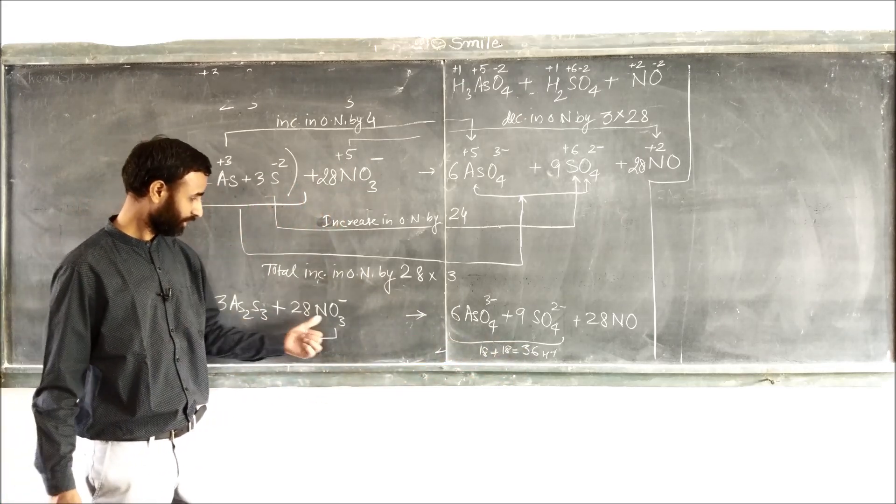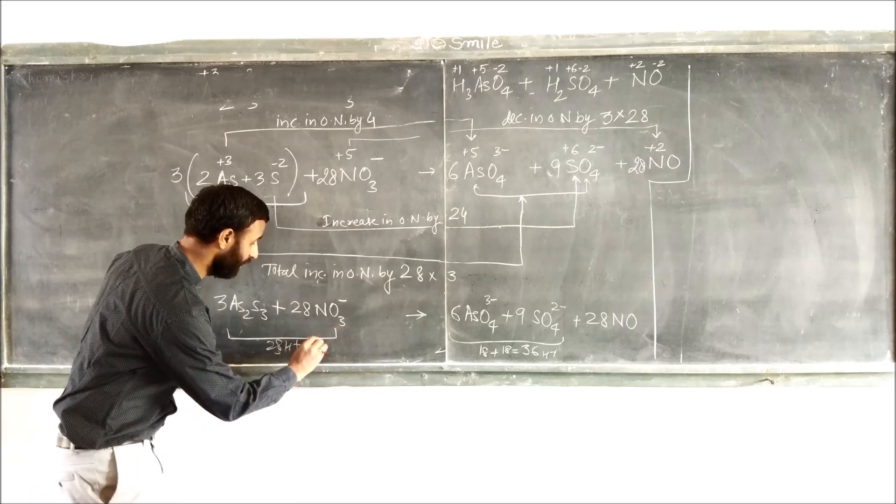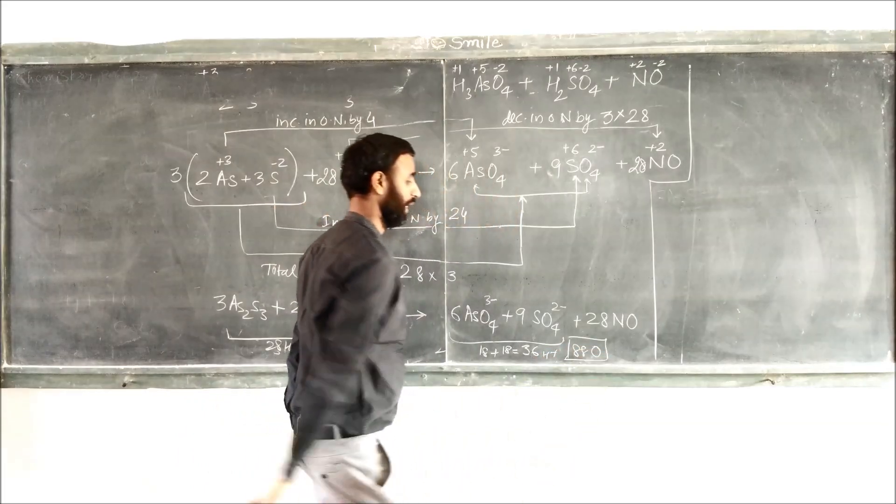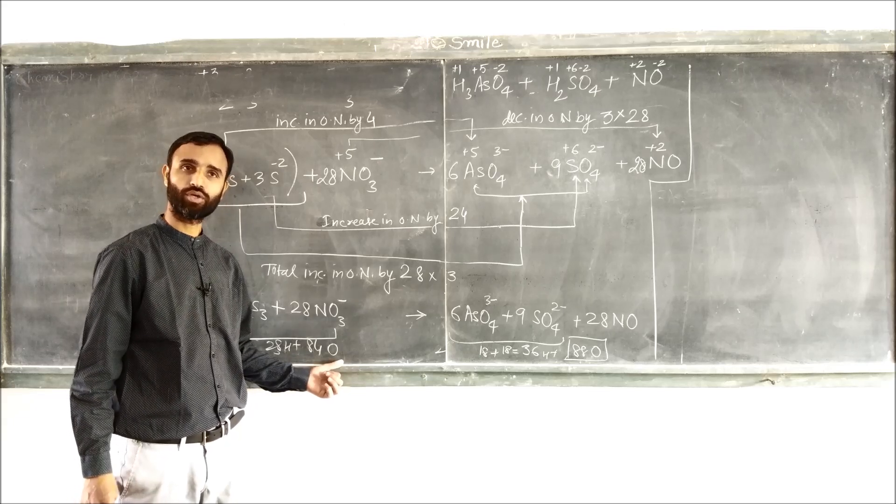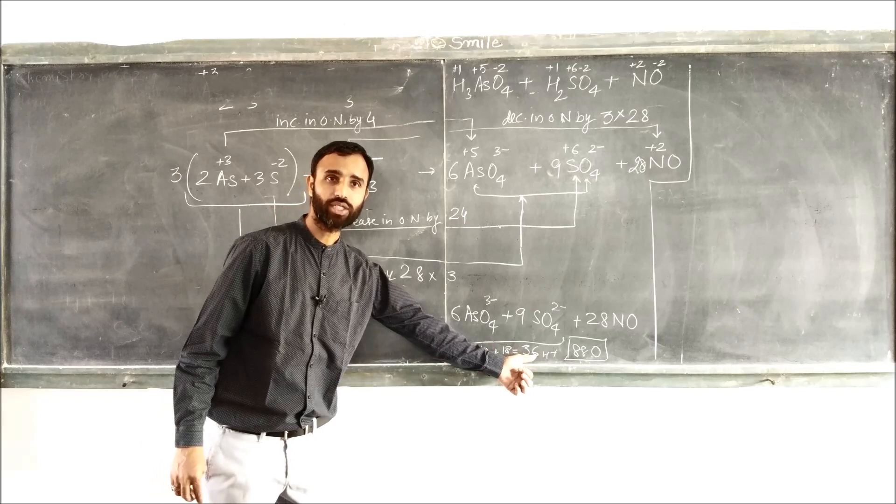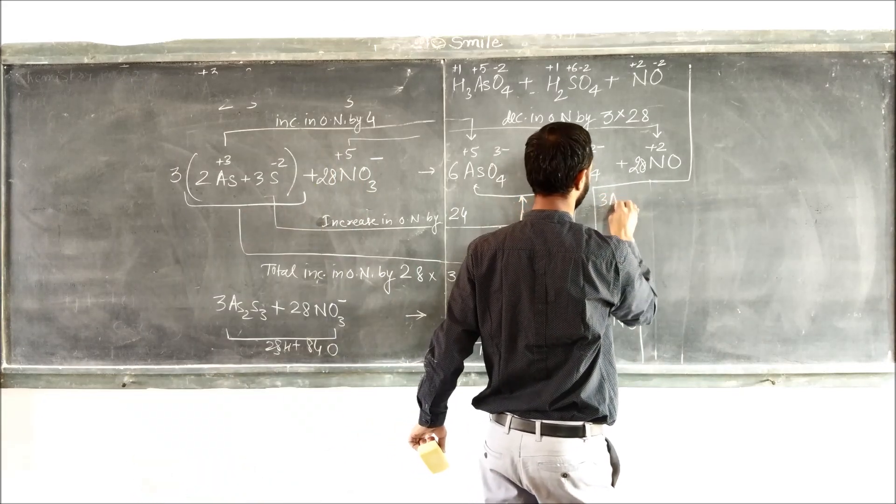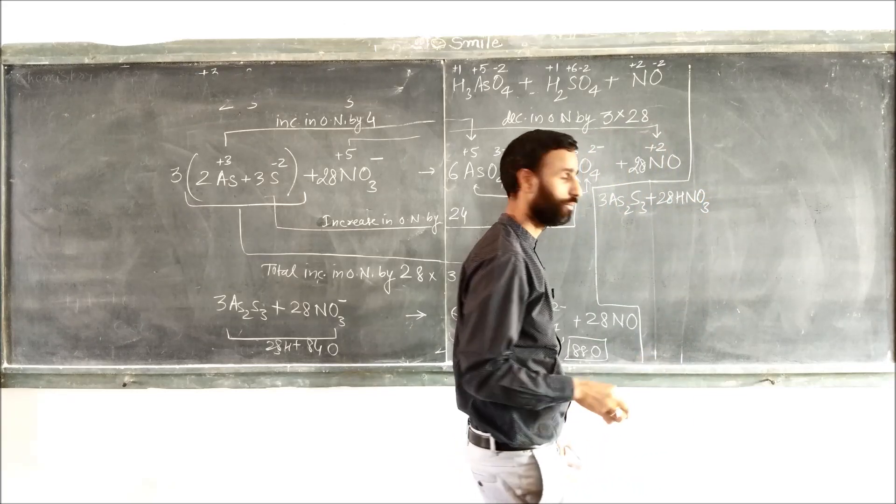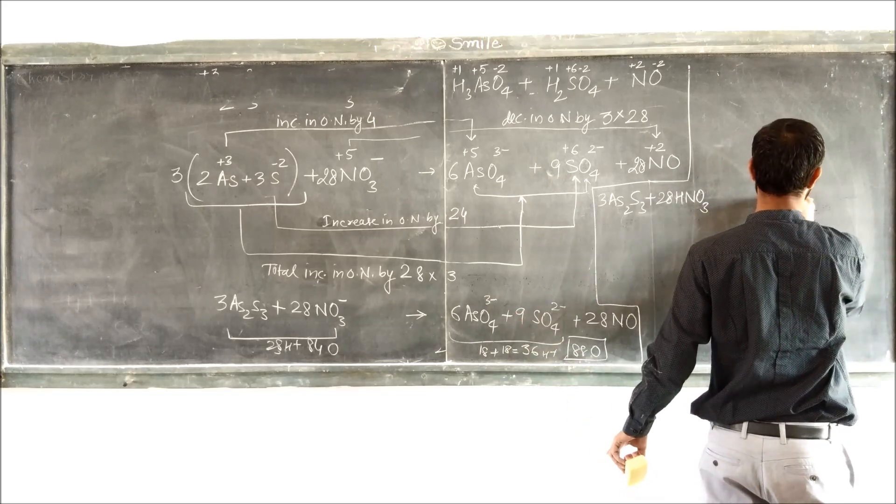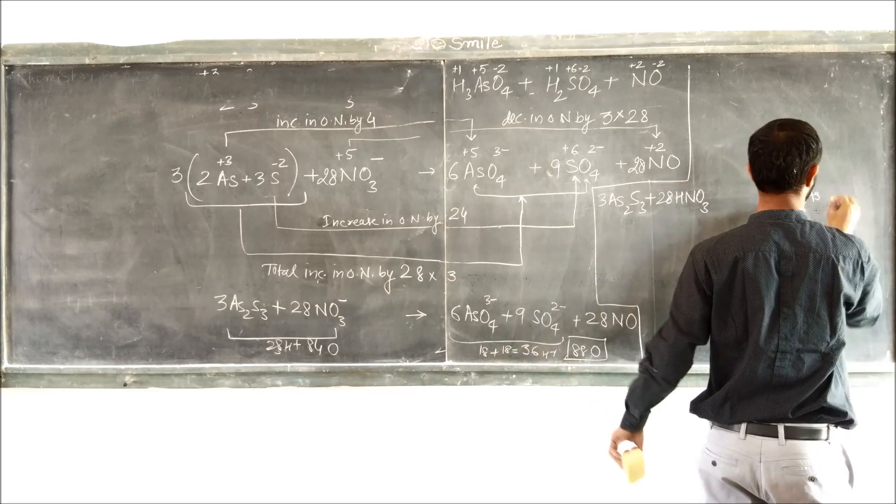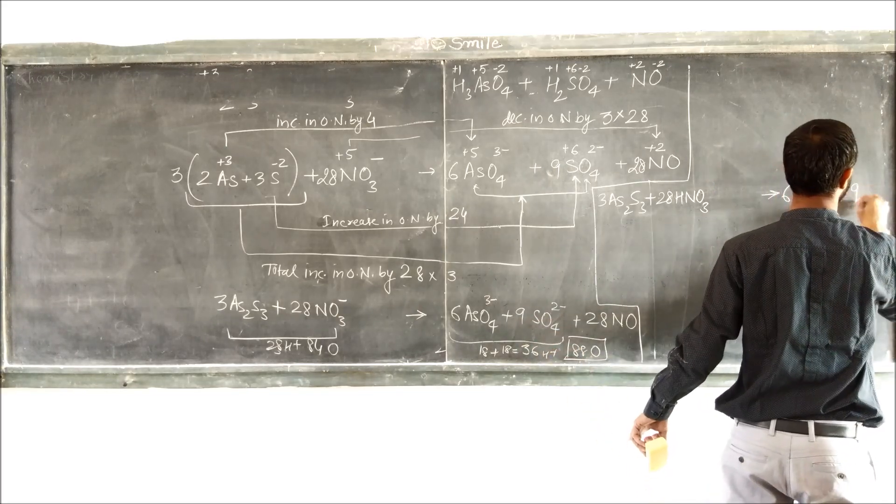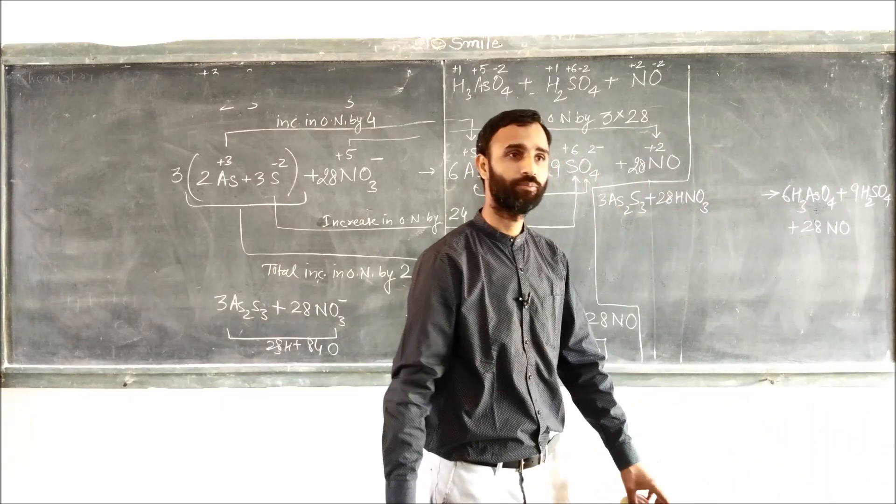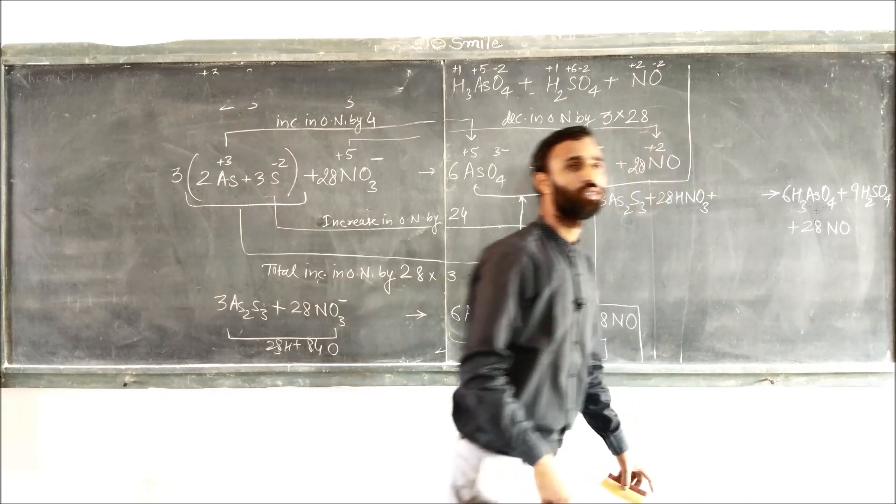Oxygens: 84 oxygen, 88 oxygen. 84 oxygen, 28 hydrogen, 36 hydrogen. Now we have 3 As2S3 plus 28 HNO3 to give 6 H3AsO4 plus 9 H2SO4 plus 28 NO. Now first balance hydrogens.